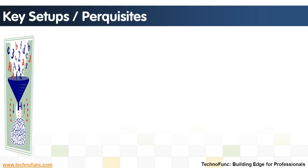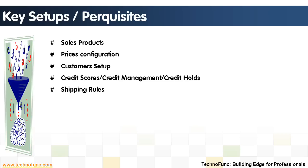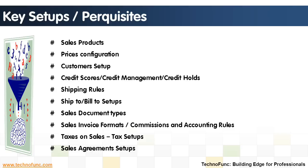Key setups and prerequisites: some key master data elements or setups are required before transactions can take place in any ERP system. These include: sales products, prices configuration, customer setup, credit scores, credit management and credit holds, shipping rules, ship-to and bill-to setups, sales document types, sales invoice formats, commissions and accounting rules, taxes and sales tax setups, sales agreements setups, and revenue recognition rules.